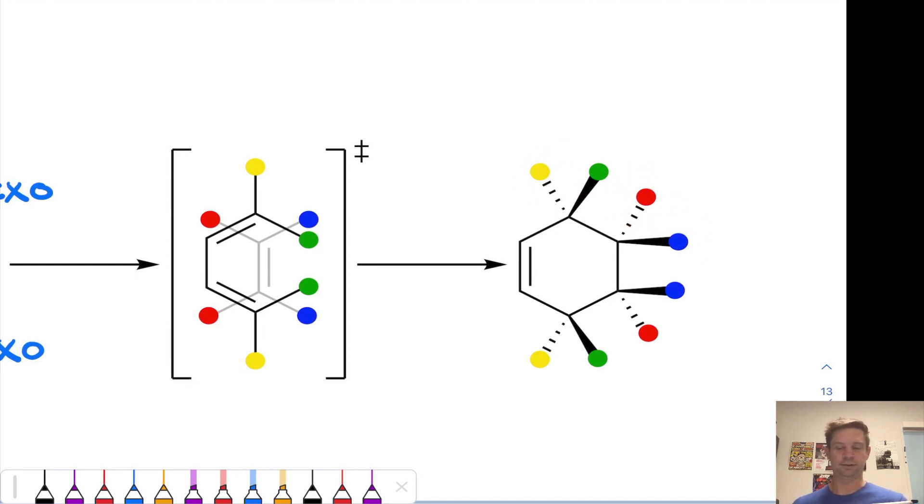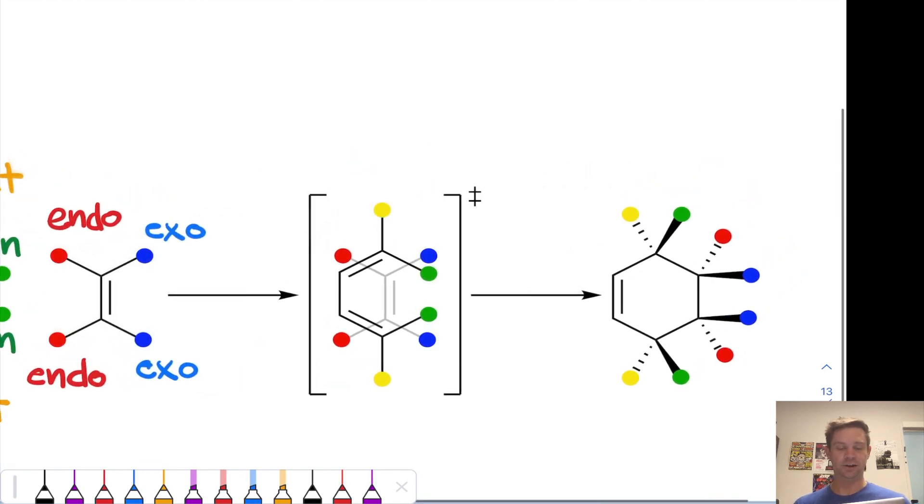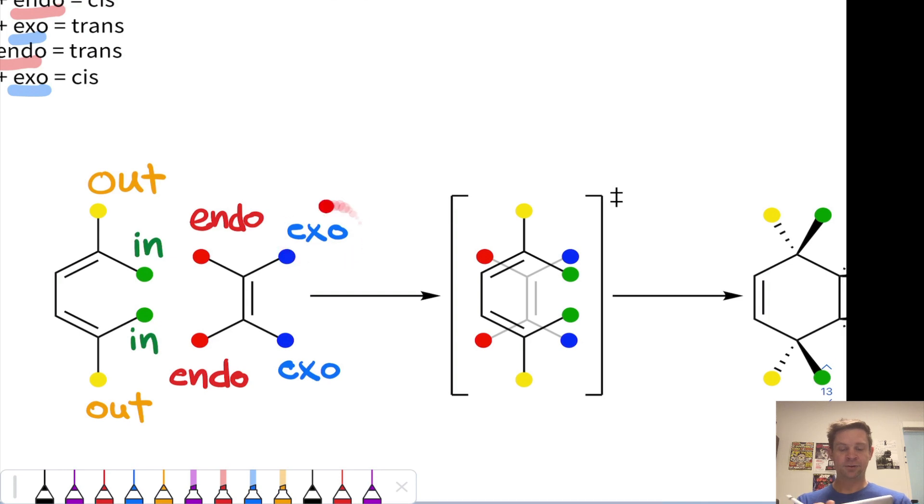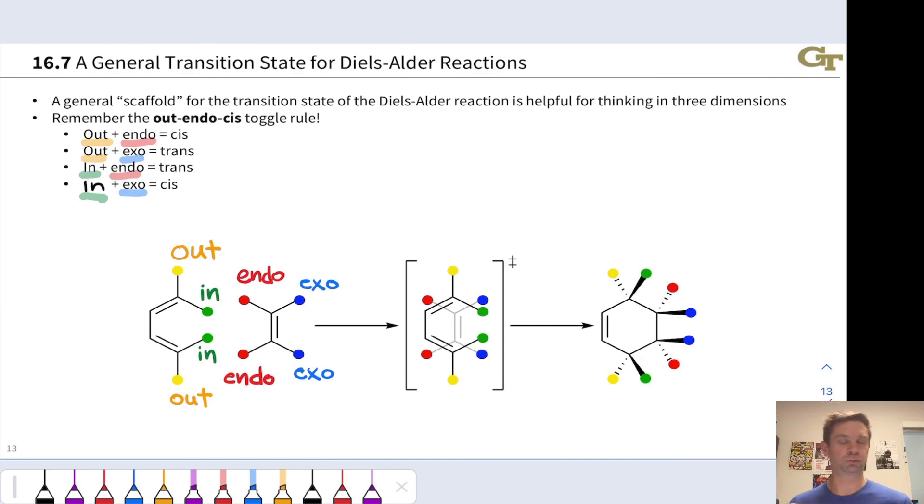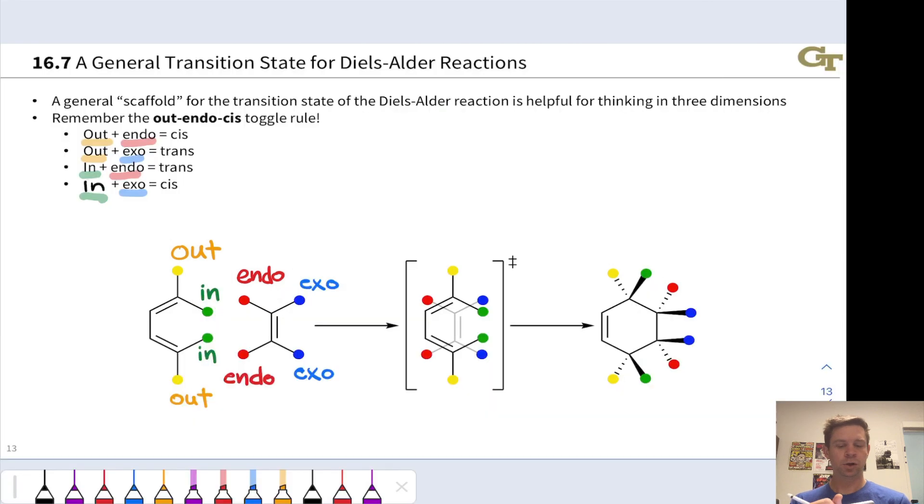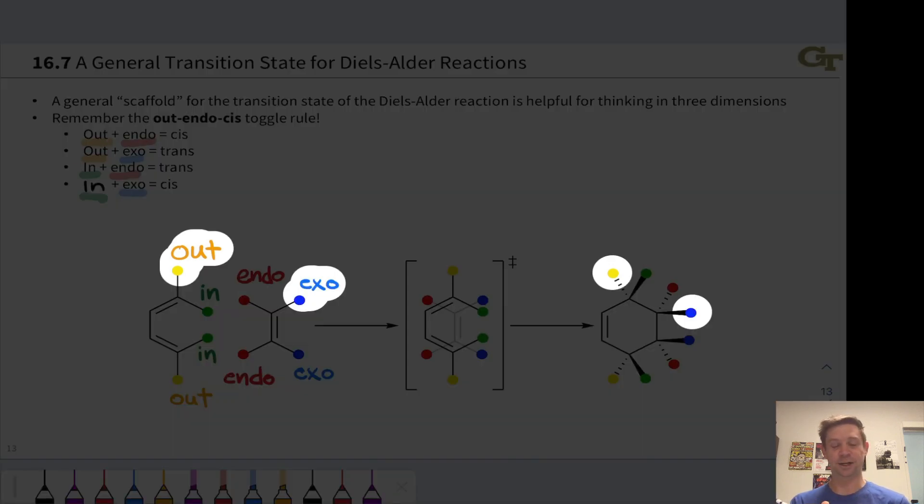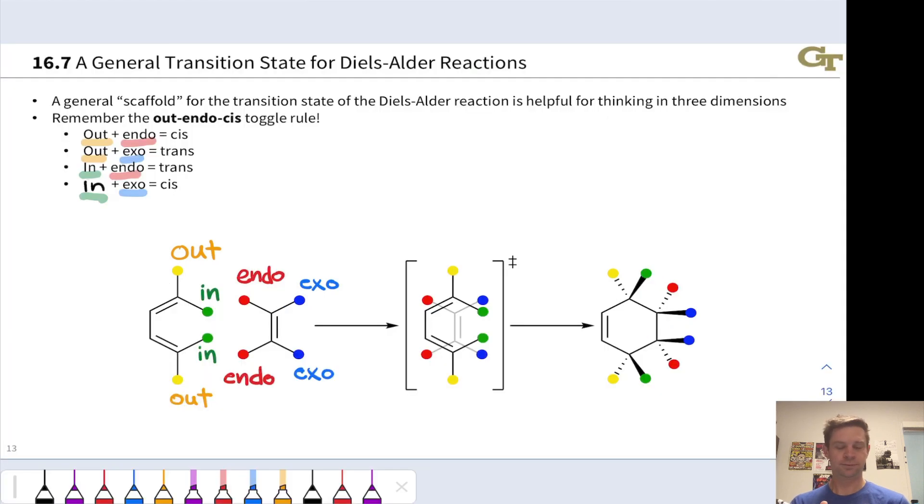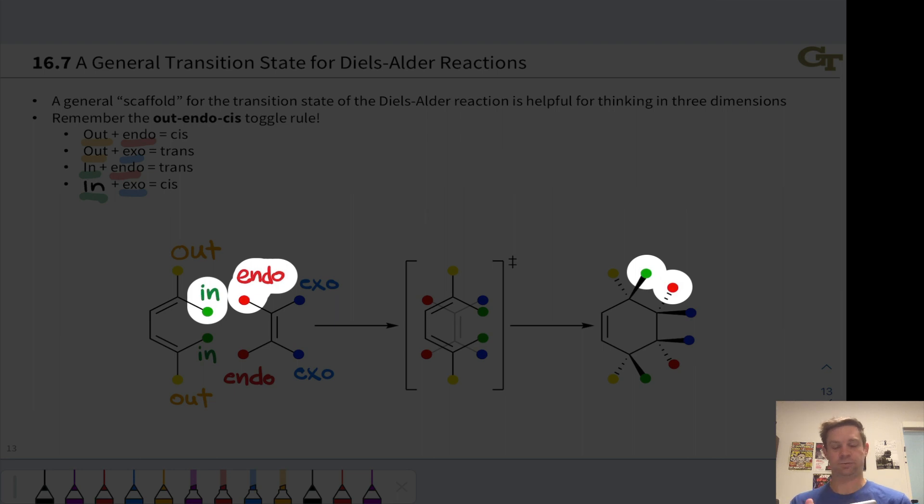Red and yellow are cis to each other. In the language of out, in, endo, and exo, exo and in will be cis to each other. Out and endo will be cis to each other. We can put all this together into a general toggle rule for drawing Diels-Alder products. Groups that are out in the diene and endo in the dienophile will end up cis in the product. Groups that are out in the diene and exo in the dienophile will end up trans in the product. Groups that are in in the diene and endo in the dienophile will end up trans in the product. And groups that are in in the diene and exo in the dienophile will end up cis in the product.